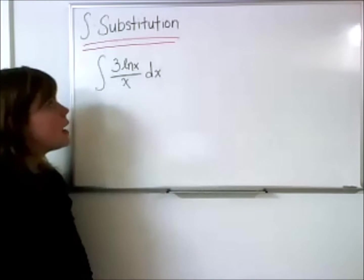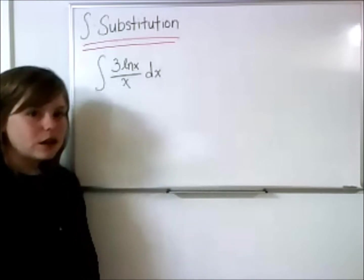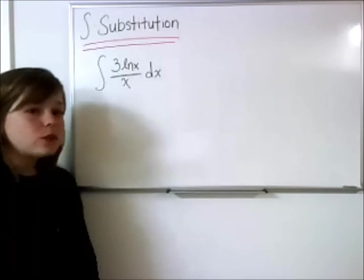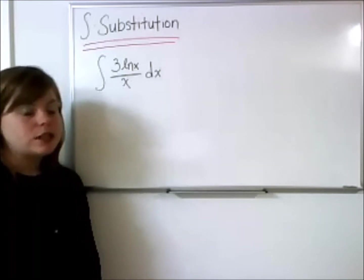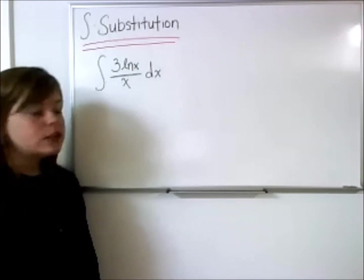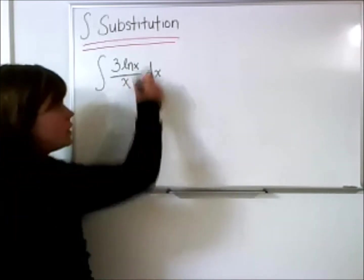So, in this integral, we have 3 times the natural log of x, all over x. When we use substitution, more specifically sometimes called u-substitution, what we're doing is choosing a piece of this integrand,